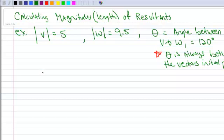Here's an example. We want to calculate the magnitude - magnitude means length of the resultants. So when you have these little bars around your vector which look like absolute value symbols, it's not absolute value symbols. This means length.